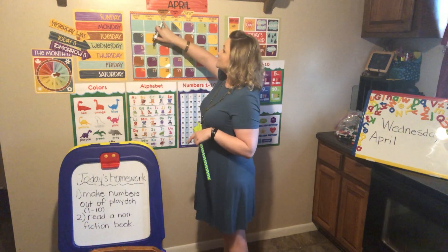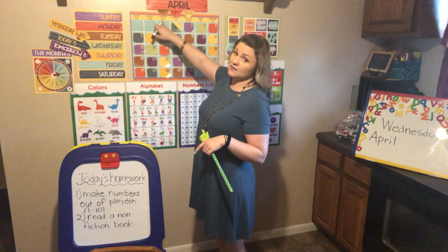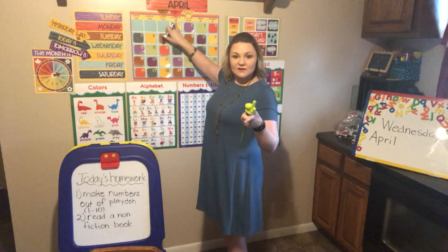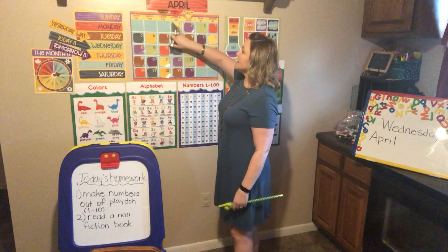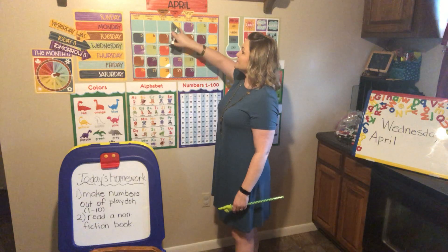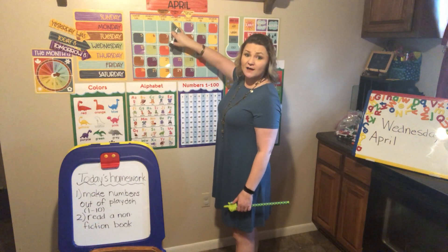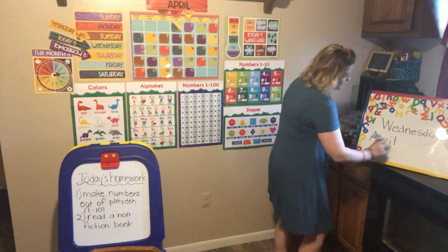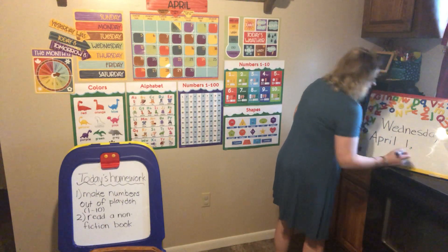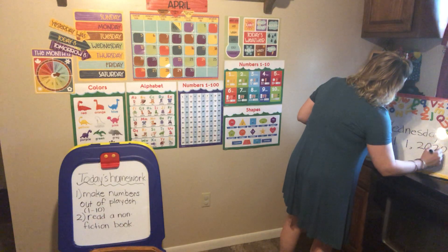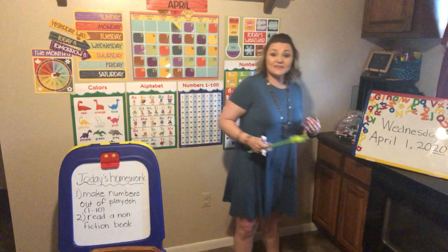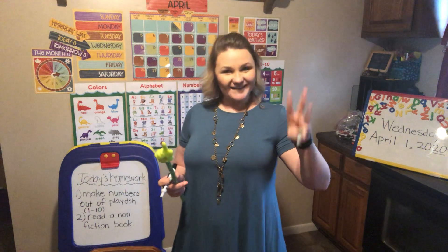This says yesterday was Tuesday — do you remember our morning meeting from Tuesday? Today is Wednesday. You guys told me it was Wednesday, and you're so smart! Today is Wednesday, and look — today is the first. So April the 1st, and the year is 2020. Good job! So to write the date, I need what three pieces of information? Month, day, year. Good job!